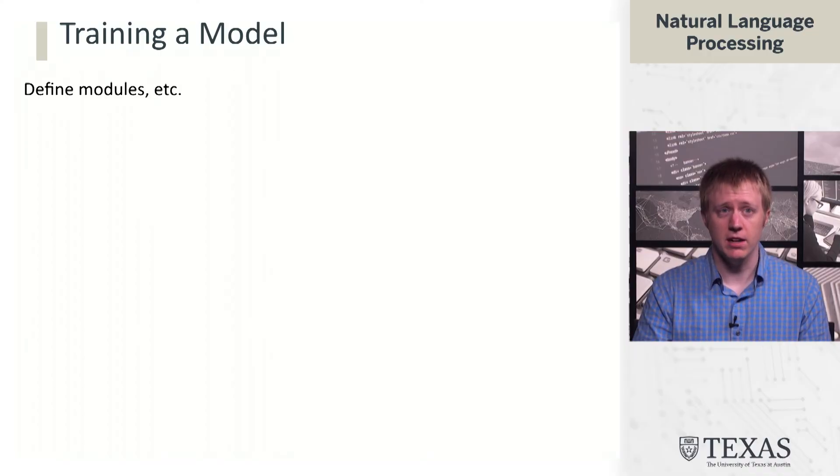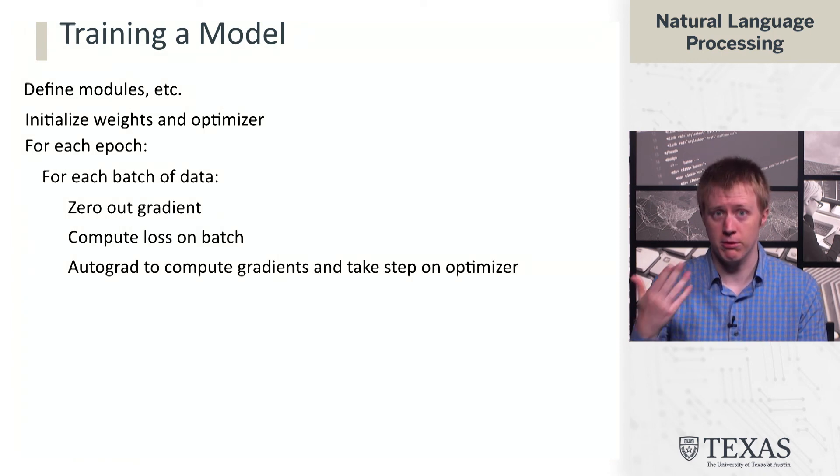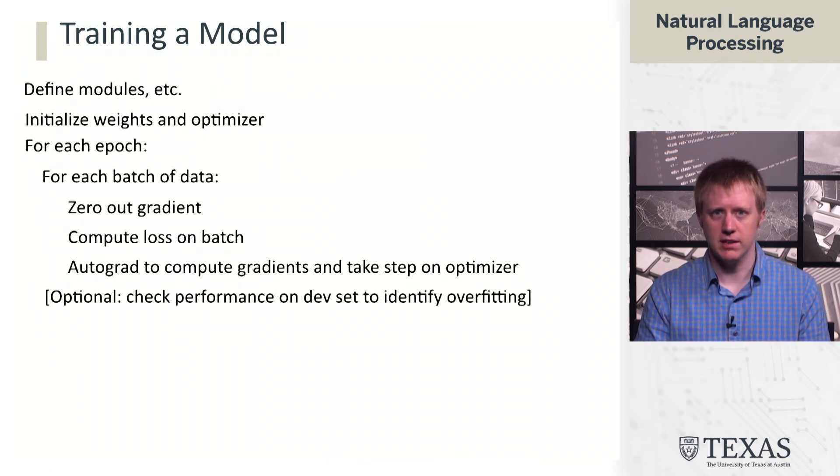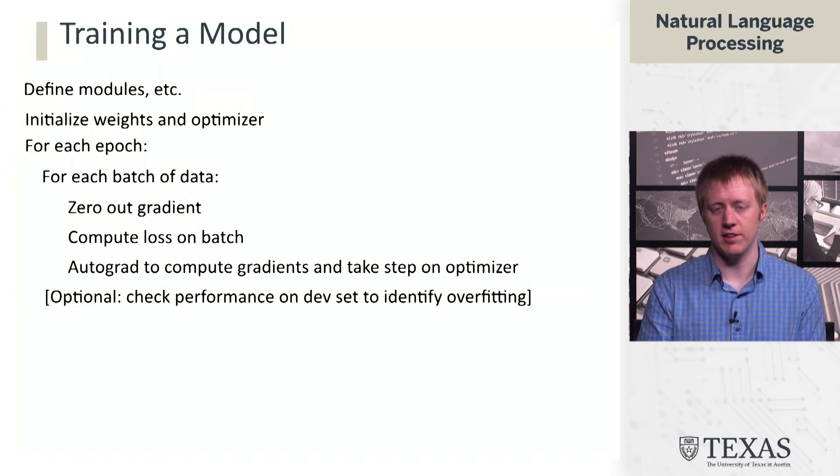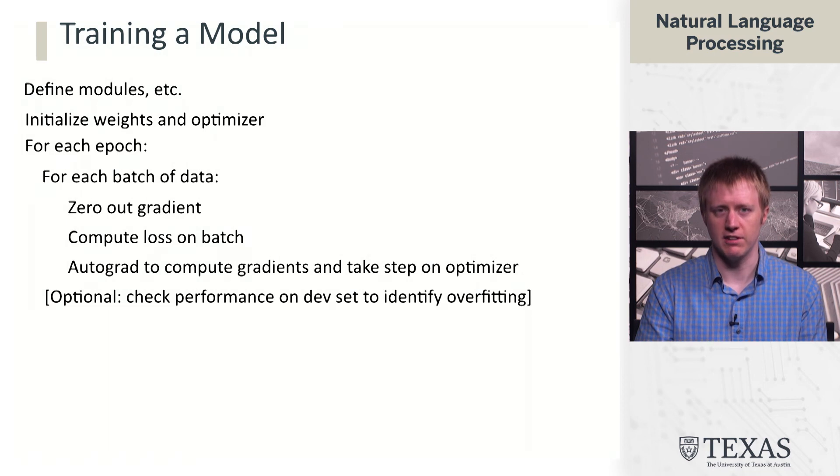The final picture of training: we define our modules, we initialize our weights for them and our optimizer. Then we loop through epochs and data batches. We zero out the gradient, we compute the loss, and we use backward, our automatic differentiation, to compute gradients. We take a step on the optimizer. After each epoch, one thing we might consider doing is check performance on our development set. We want to make sure that we're not overfitting, that we're still making good progress, that everything is set up correctly. This is a good thing to get in the habit of doing: periodically have a small set of validation data and check performance on that just to make sure that things are working as intended.